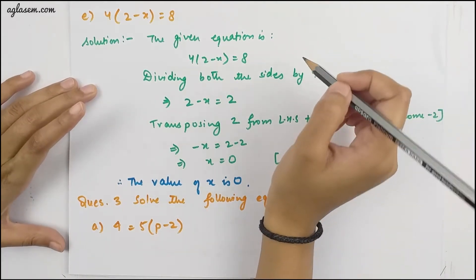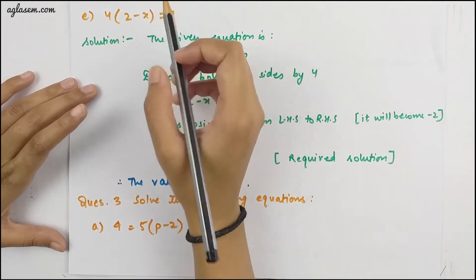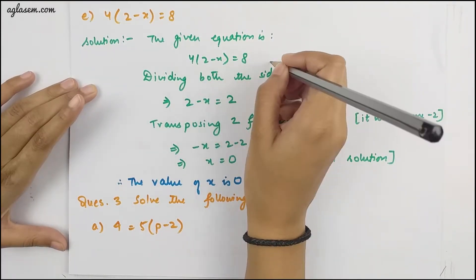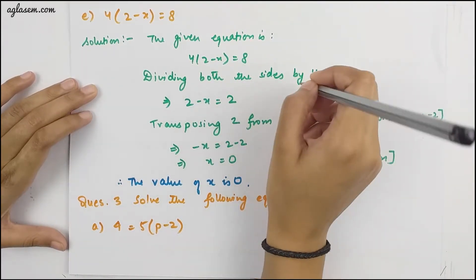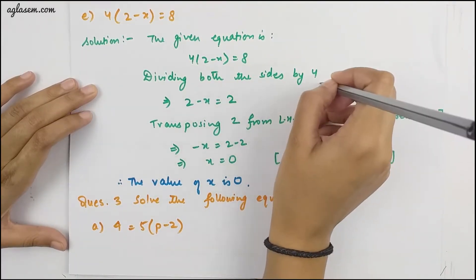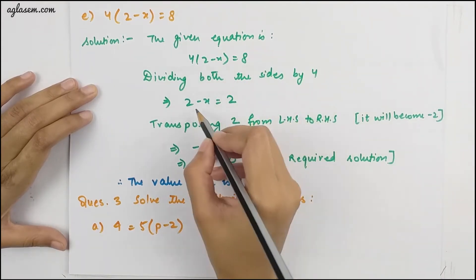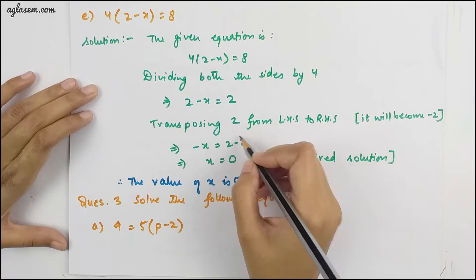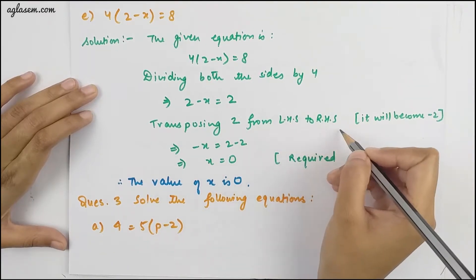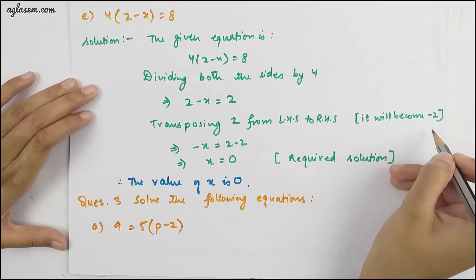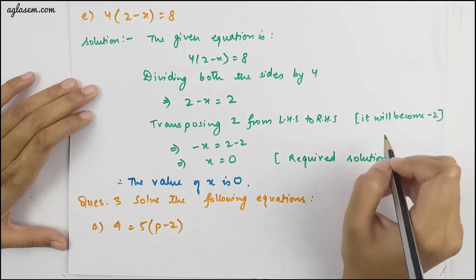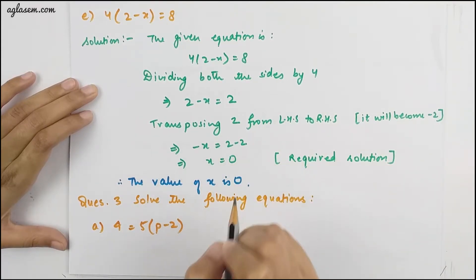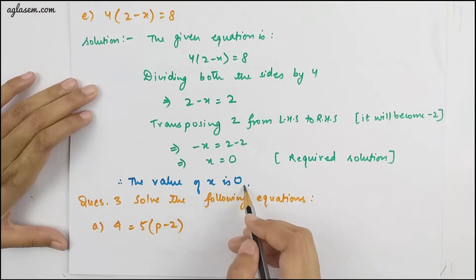The E part is 4(2 − x) = 8. Dividing both sides by 4, we have 2 − x = 2. Transposing 2 from LHS to RHS, it becomes −2. From here, we have the value of x = 0. Therefore the value of x is 0.